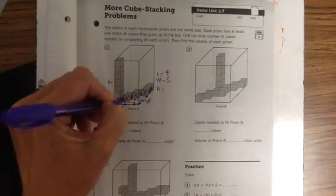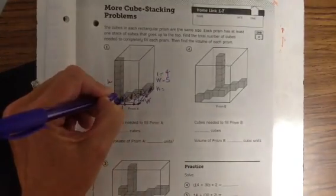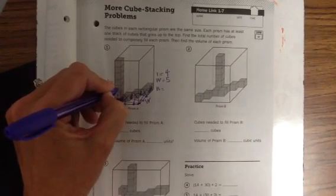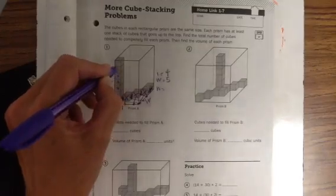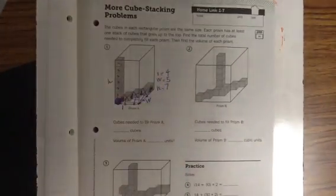And then our height, they made it kind of easy for us in the corner, would be 1, 2, 3, 4, 5, 6, 7. So our height is 7.